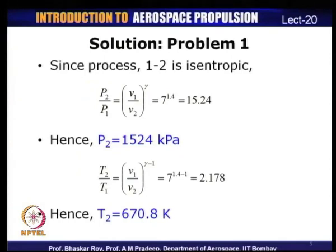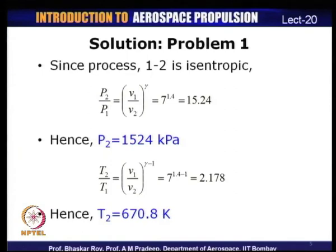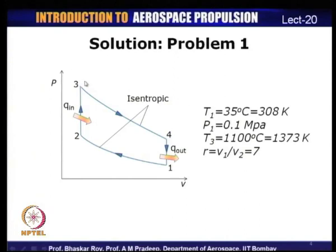For isentropic process 1→2, we know P·Vᵞ = constant, so P₂/P₁ = (V₁/V₂)ᵞ = 7^1.4 = 15.24. Since P₁ = 0.1 MPa, P₂ = 0.1 × 10³ × 15.24 = 1524 kPa. We have now determined the pressure at state 2 from the isentropic relation.